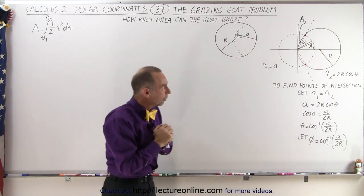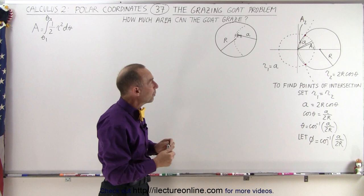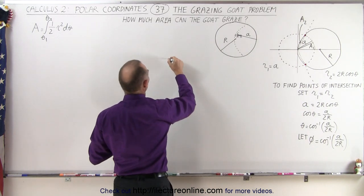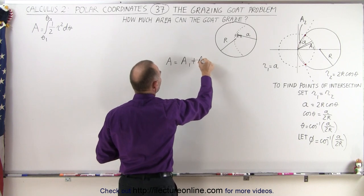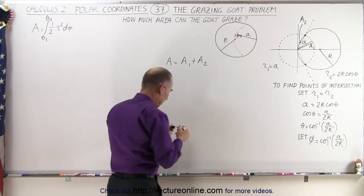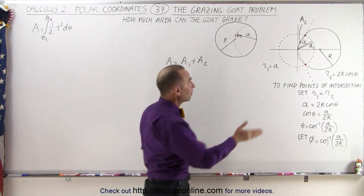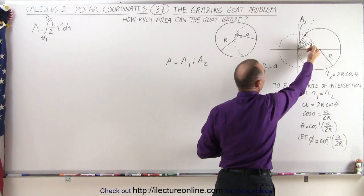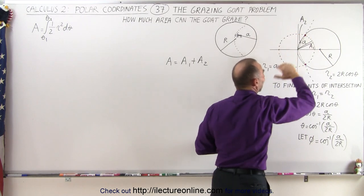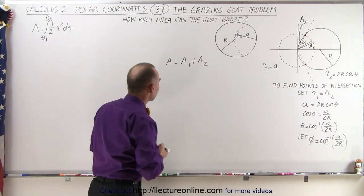We're going to attack it in the same way. The total area is simply going to be the sum of A1 plus A2. Notice there's perfect symmetry between the top half and the bottom half, so we're only going to integrate the top half and then multiply by 2 to get the entire area.